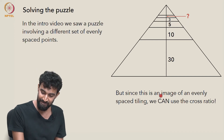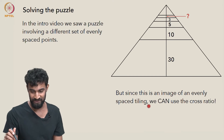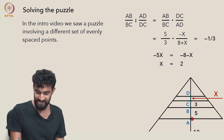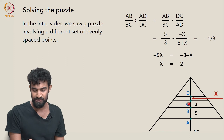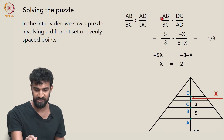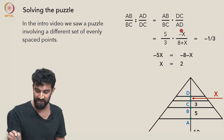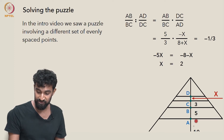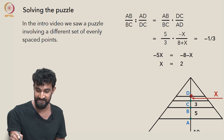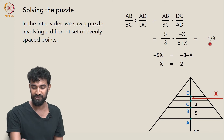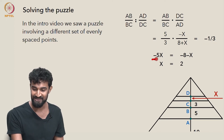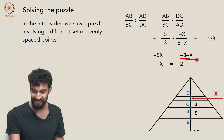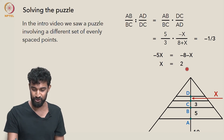But this is an image of an evenly spaced tiling, and we can use the cross-ratio. Zooming in, let's mark some points as A, B, C, and D. We know this distance is 5 and this is 3. If we calculate the cross-ratio — plugging in 5 for AB, 3 for BC, AD is 5 plus 3 plus X which is 8 plus X, and DC is negative X — that has to equal negative 1 third. Multiplying this out, we get that negative 5X equals negative 8 minus X, so X equals 2. The next tile height is 2.